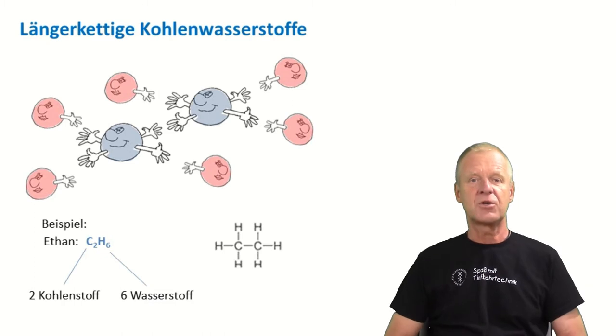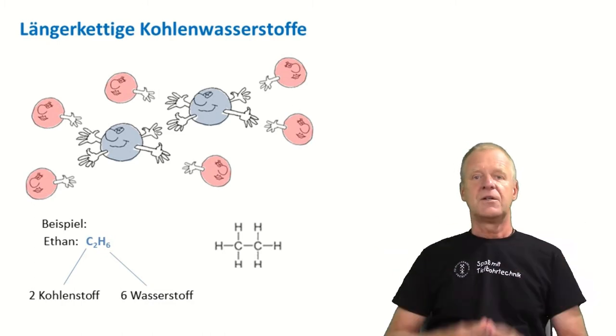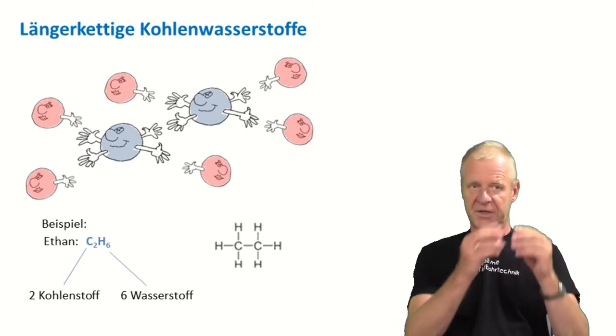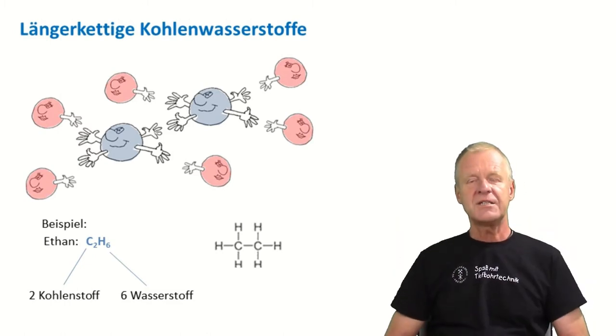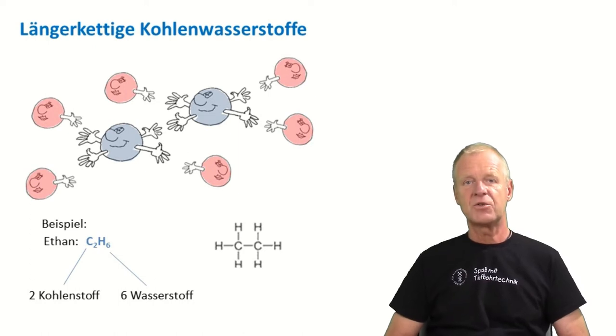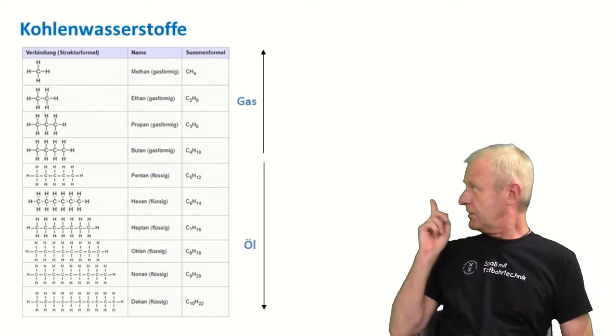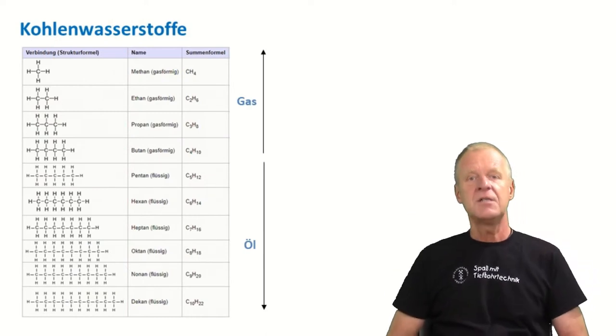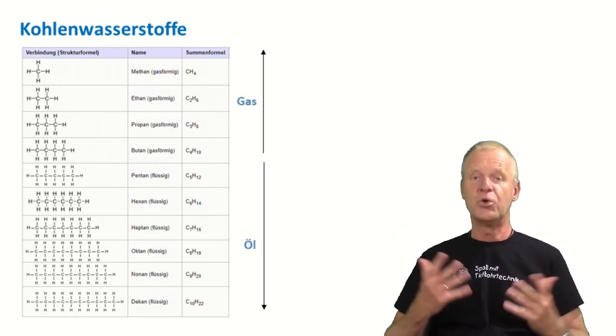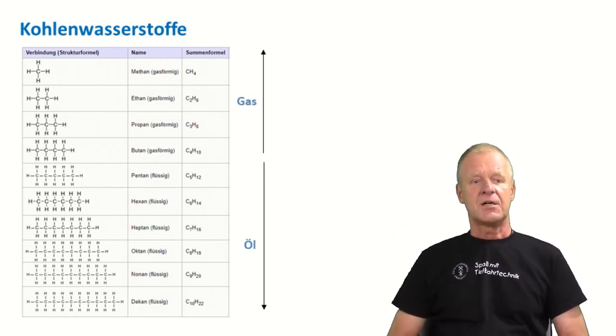But as stated earlier, carbon also likes to combine with other carbon atoms. Therefore, there are also hydrocarbons when several hydrocarbons come together to form a chain. The carbon atoms form the chain core and the free hands grab all the hydrogen atoms. These chains can be as long as you want, as you see on this table. The shorter chains are gases and the longer chains are in a liquid state. I will call them crude oil.